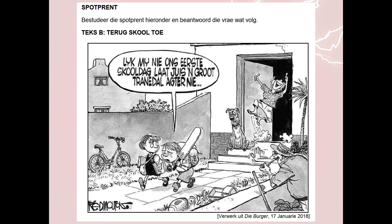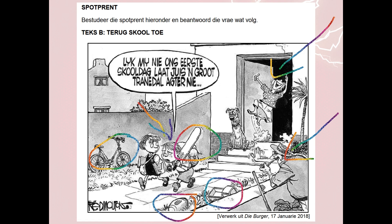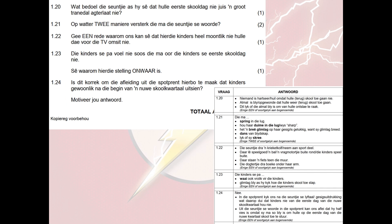This one is from the 2018 paper. When you look at it, you'll see facial expressions — you have to look at everybody's facial expressions. Look at the surroundings: what do you see, and what is happening? These are all based on the visual, so they are all comprehension. For example, 1.20: what does the boy mean when he says that their first school day doesn't really leave a big valley of tears? 1.21: in what two ways does the mother emphasize the boy's words? That would be her actions — her jumping up in the air, giving thumbs up, having a big smile, dancing, looking like she's yelling.